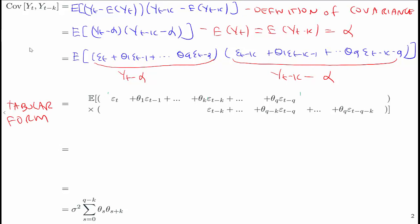So we now want to do what we did before in the MA(2). We want to find the concurrent shocks in yt minus alpha and yt minus k minus alpha. We put the process into what's called tabular form, rewriting what we had above but placing them such that we can see which shocks are concurrent. We can see that the first shock which appears in both is epsilon t minus k. The common shocks go from epsilon t minus k down to epsilon t minus q.